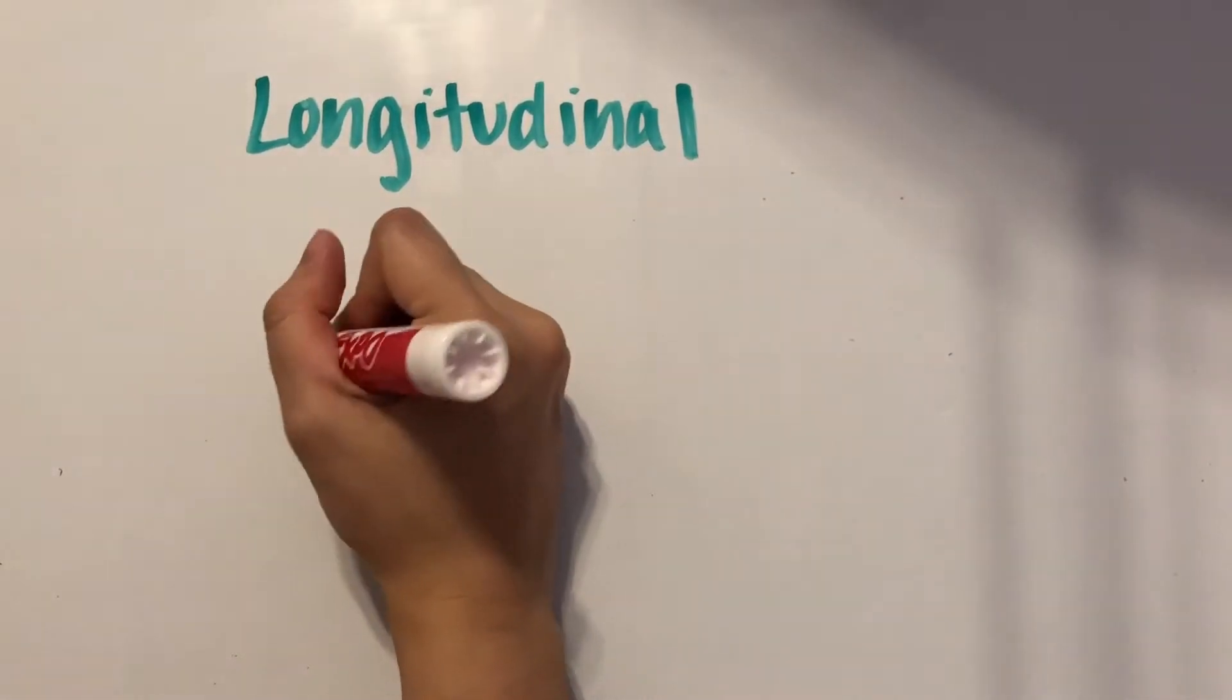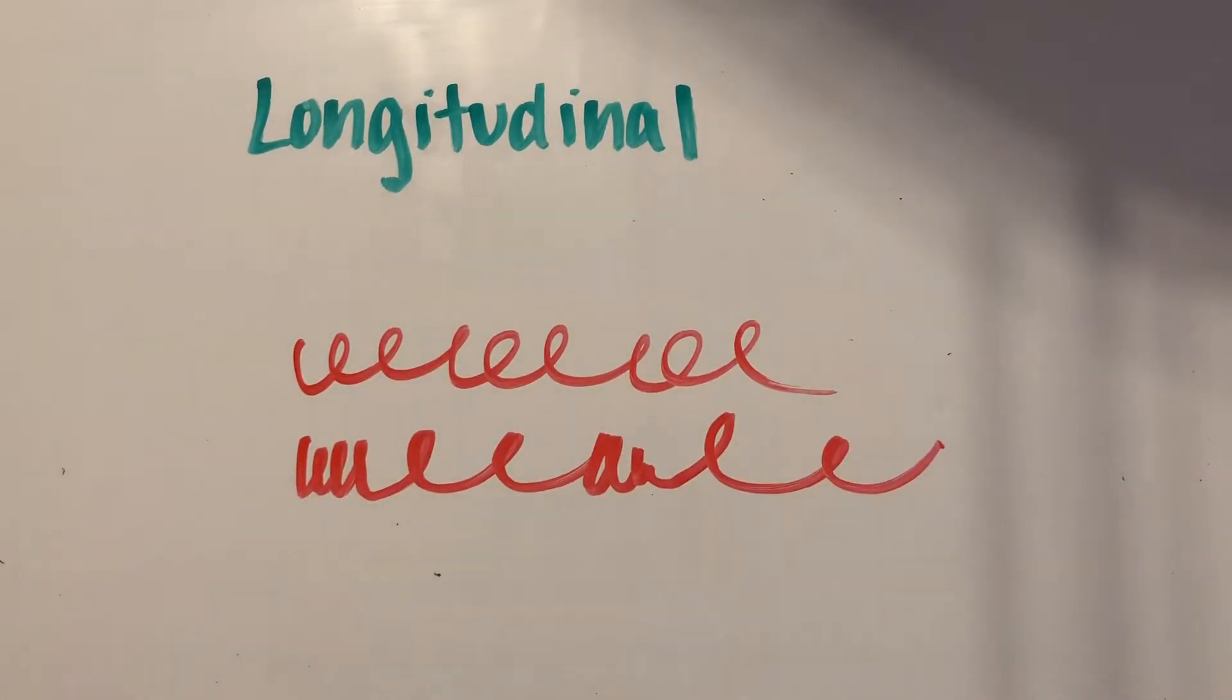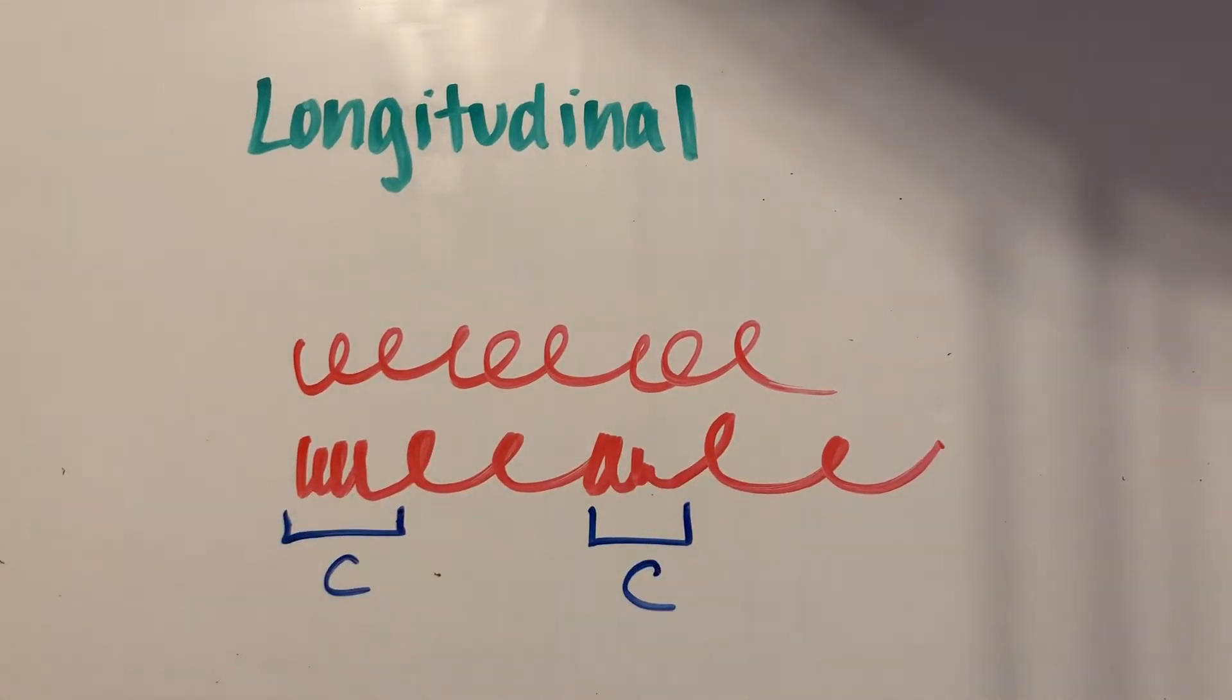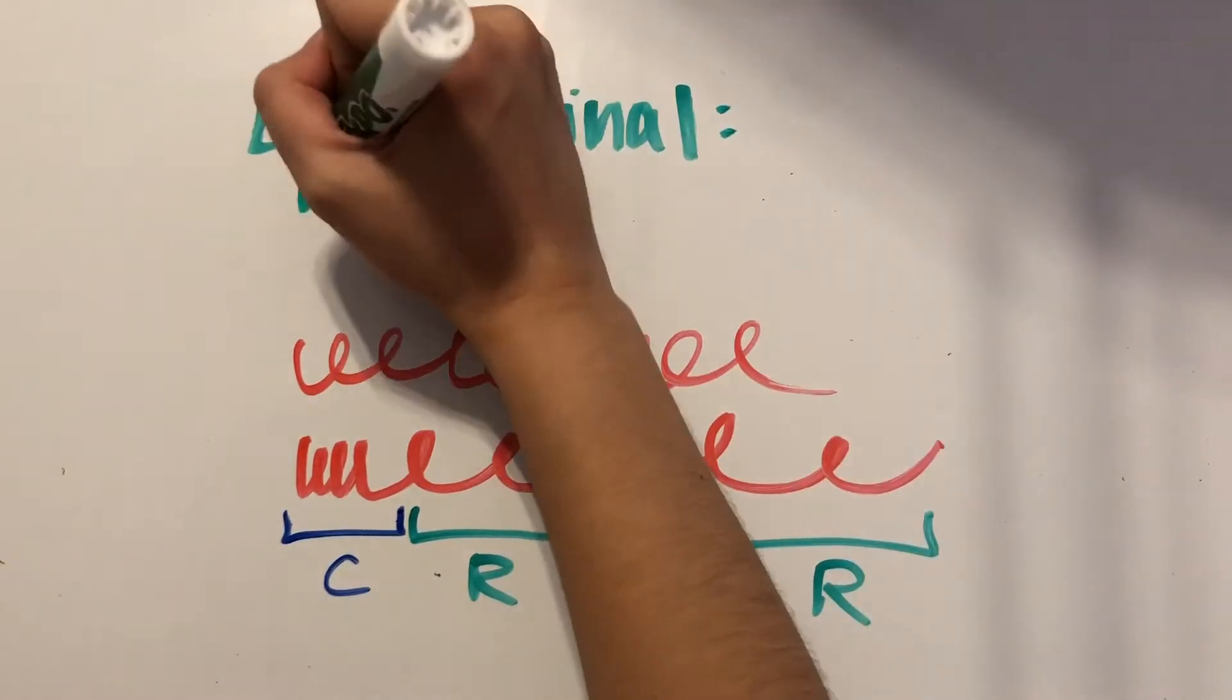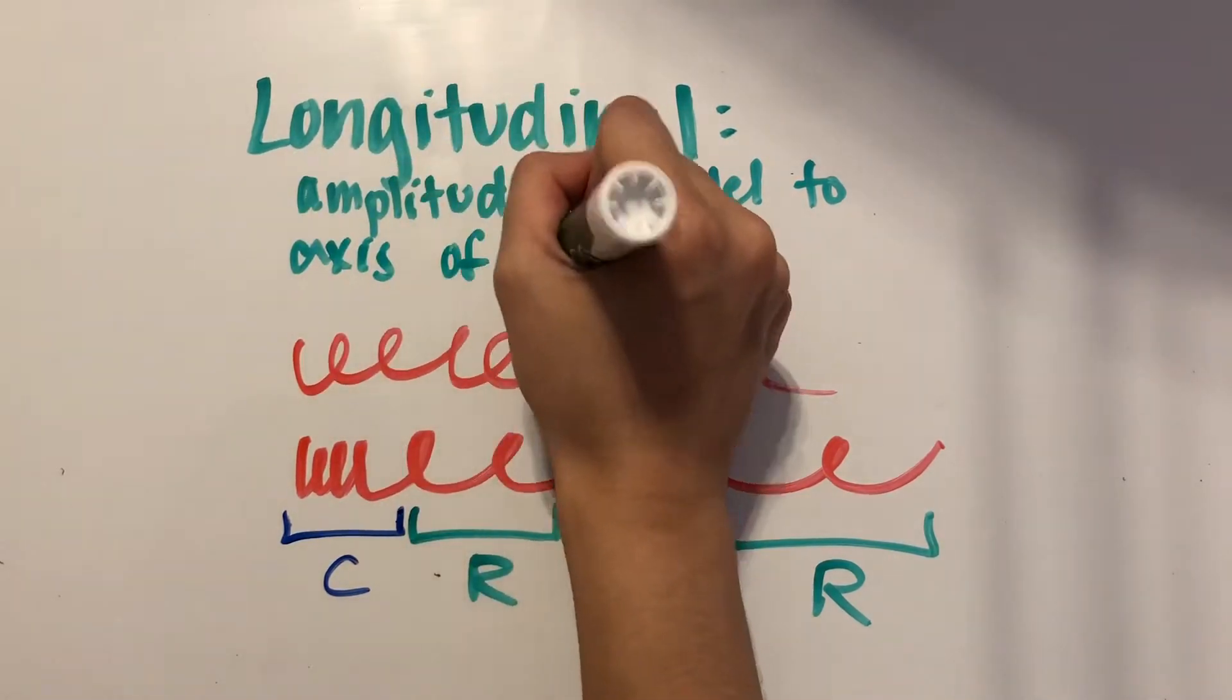The opposite of this would be a longitudinal wave. If we push the spring in and out instead, we'll get regions of compression, which is where the spring is more compact, and rarefaction, which is where the spring is more spread out. And the amplitude of this wave would be parallel to the axis of propagation, so it's labeled as longitudinal.